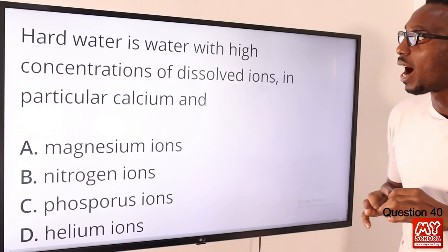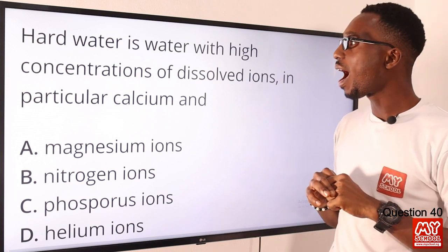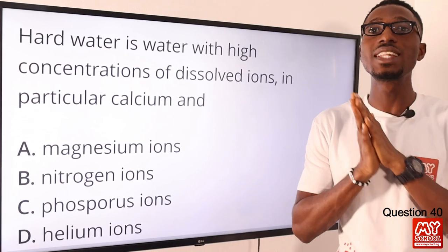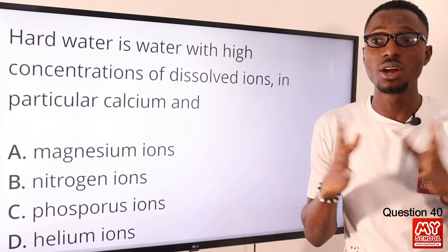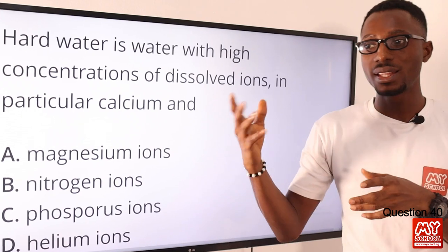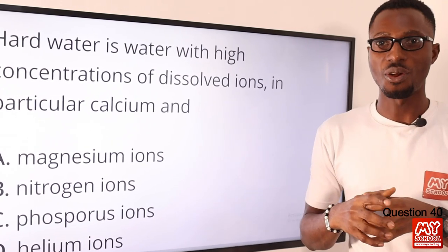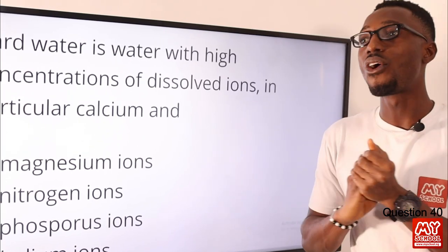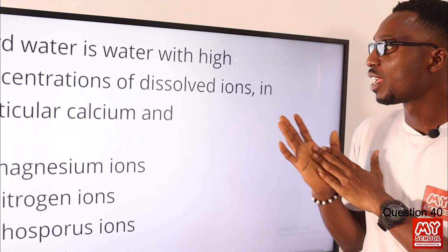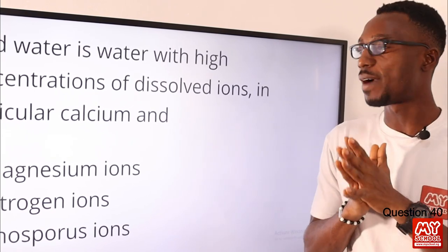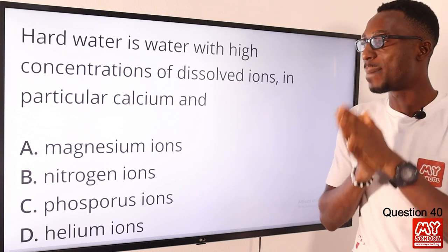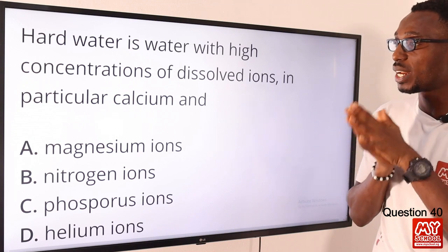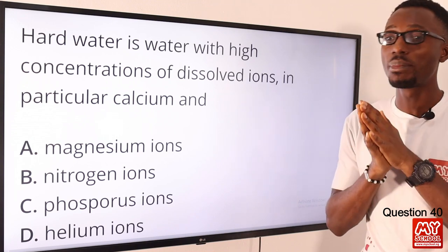Question 40. Hard water is water with high concentrations of dissolved ions, in particular calcium and magnesium. You find these ions probably in rivers, in wells, and the like. Either you are talking about temporary hard water or permanent hard water, the soluble source that you are going to find — that will be of calcium and magnesium ions. These are very important, and so the correct option is option A: calcium and magnesium ions.